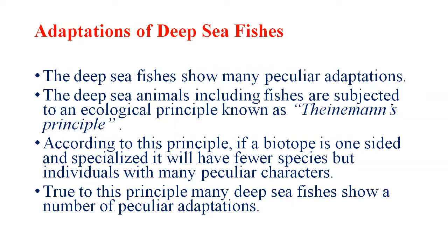What are the adaptations of deep sea fishes? The deep sea fishes show many peculiar adaptations. The deep sea animals, including fishes, are subjected to an ecological principle known as Finmouth's principle. According to this principle, if a biotope is one-sided and specialized, it will have fewer species but individuals with many peculiar characters. True to this principle, many deep sea fishes show a number of peculiar adaptations.